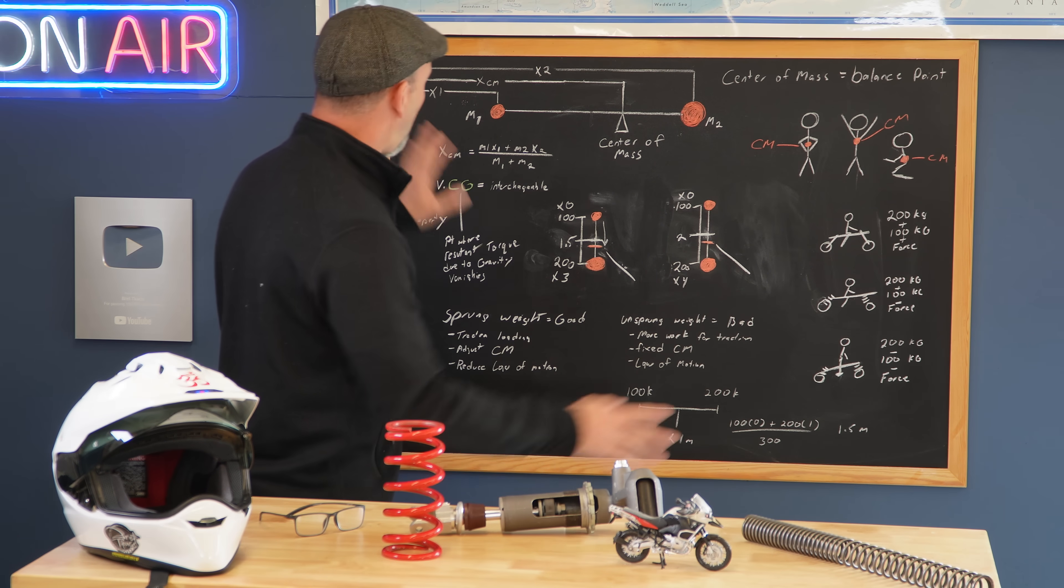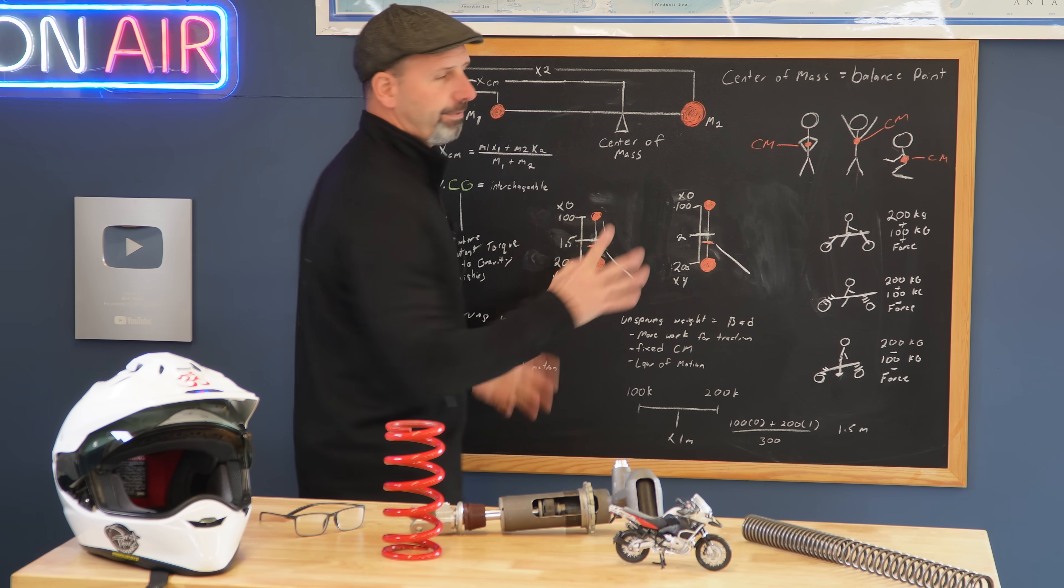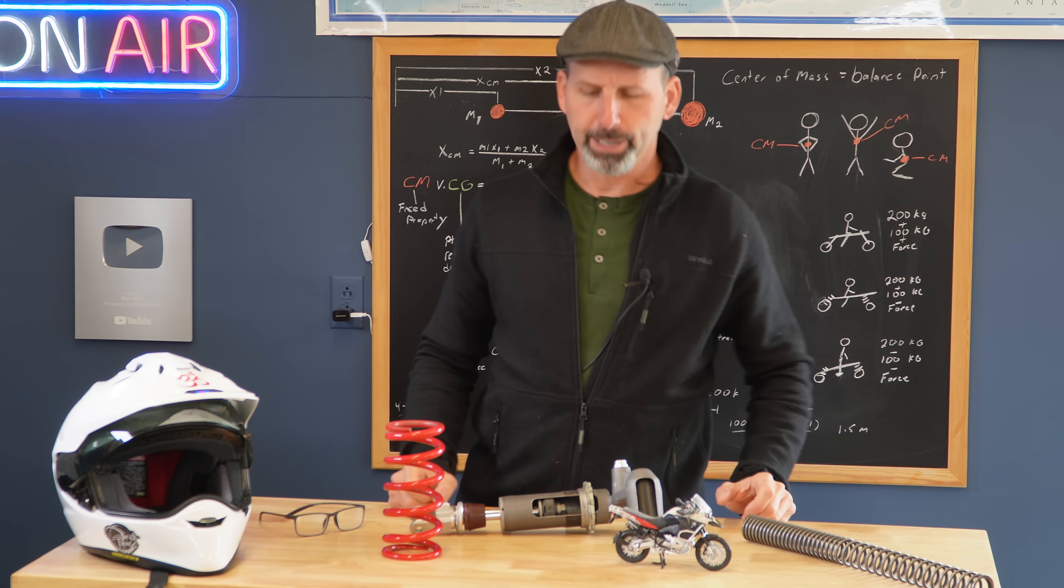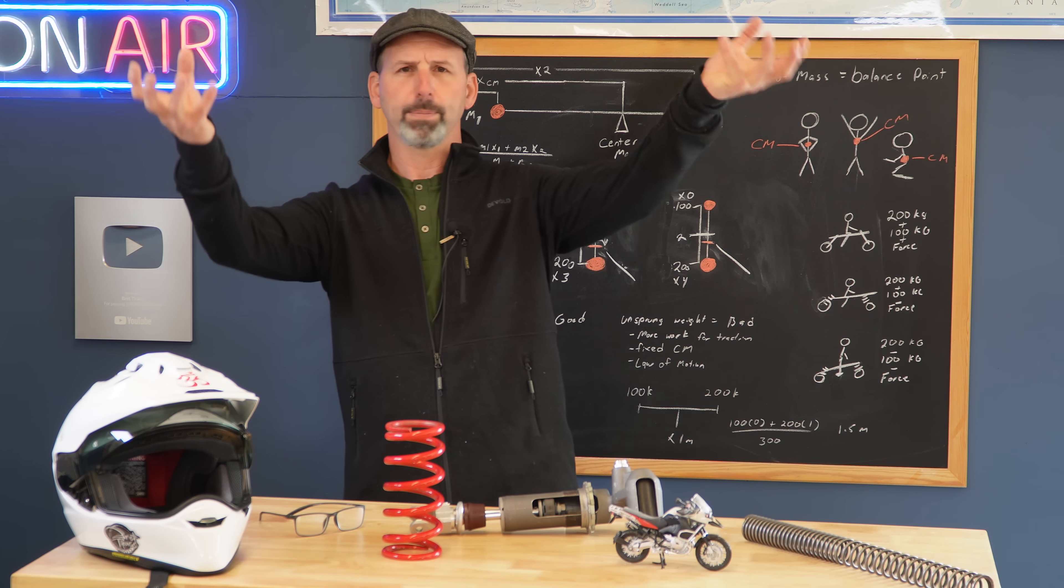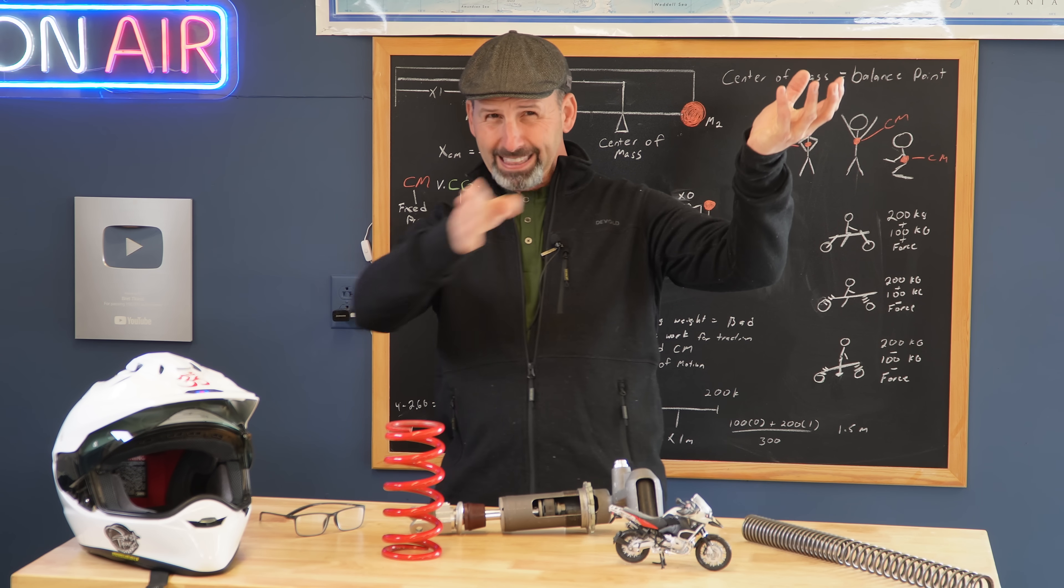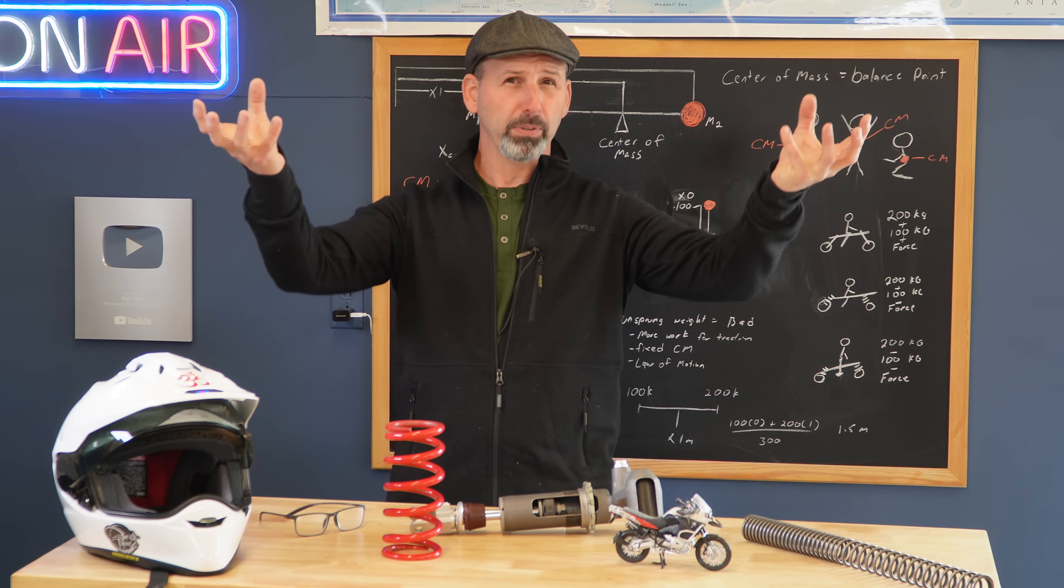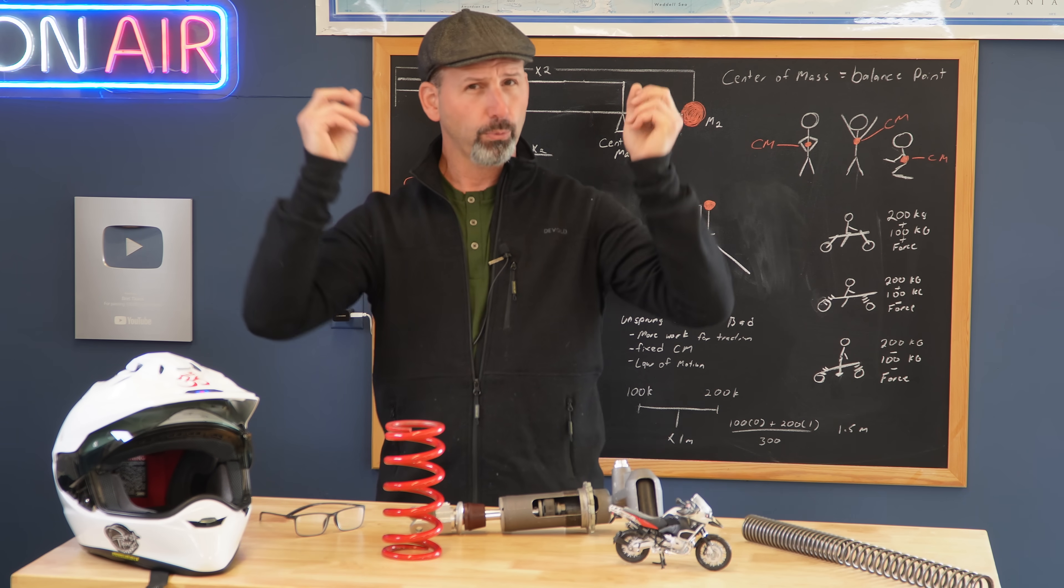To start with, all we're doing is taking two objects or the mass of two objects and trying to find the center. Simple explanation: I have 100 kilograms on one side. If they are equal weight and I find the exact center point, you would believe that is the center of gravity or center of mass. And you would be correct.